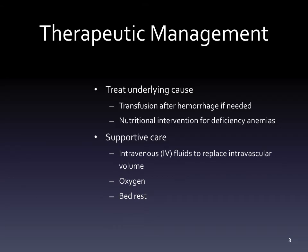As a general rule for treating anemia, we treat the underlying cause. For iron deficiency anemia, we give iron. For a clotting problem, we correct that. For a deficiency anemia, we provide nutritional intervention to replace what they're not getting. For sickle cell disease, we can't cure it, so we focus on supportive care to get them through until they recover from an exacerbation.